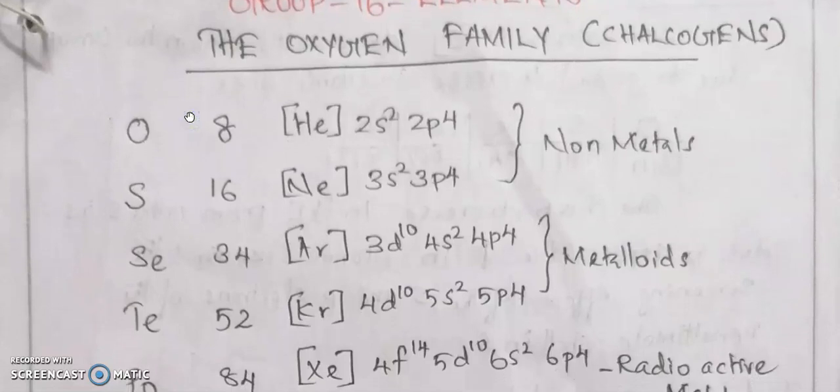Oxygen has atomic number 8 and electronic configuration [He] 2s² 2p⁴. Sulfur has atomic number 16 with configuration [Ne] 3s² 3p⁴. Oxygen and sulfur are non-metals, while selenium (atomic number 34) and tellurium (atomic number 52) are metalloids.